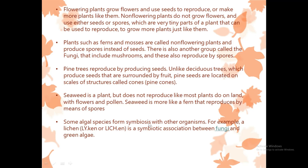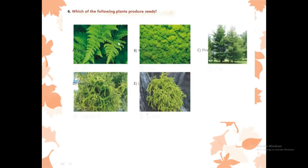Lichen is a combination of fungus and algae — a symbiotic relationship. Now read the question again: which of the following plants produce seeds? A) fern, B) moss, C) pine, D) seaweed, E) lichen. Fern, moss, seaweed and lichen are all spore-bearing. Only pine produces seeds. So answer C is correct.